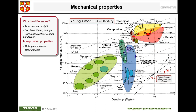Different lines represent different performance indices — for example, E to the power of one-third divided by density. In a logarithmic scale this appears as a linear line. Depending on your design choice, you work with the appropriate line. Moving the line up or down adjusts your threshold to meet your criteria.